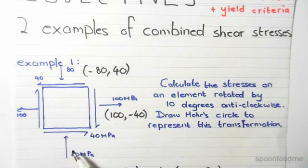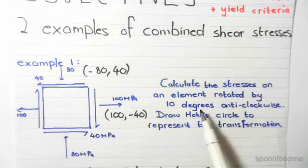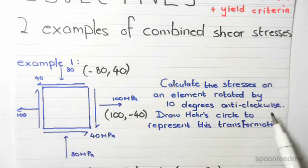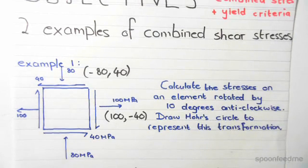Vertical normal stresses are 80 MPa. We need to calculate the stresses on an element rotated by 10 degrees anti-clockwise and draw a Mohr's circle to represent these transformations.